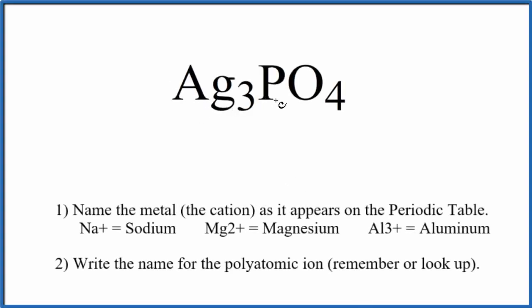To write the name for Ag3PO4, first we need to realize we have a polyatomic ion here. This is the phosphate ion, and it's bonded to these three silver atoms.